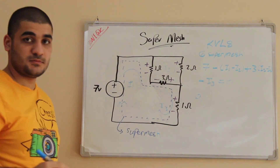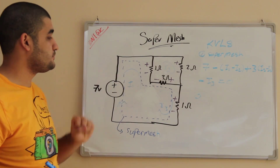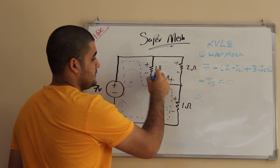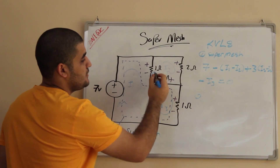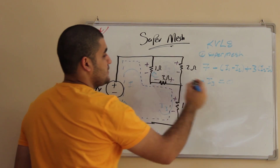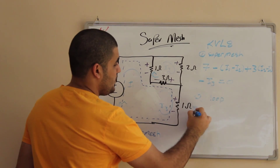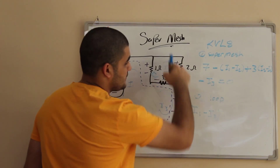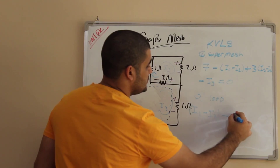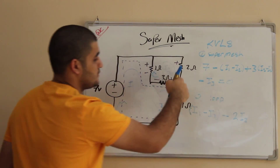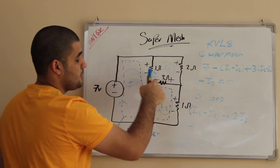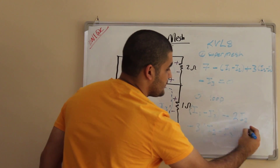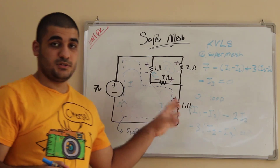Then we write the second equation of the circuit for this loop. Using the same procedures with the arrow — with the sign, so i1 minus i2. Then against the sign: plus minus, 2 ohms times i2. Then 3 ohms times (i2 minus i3). All of that is equal to zero. So these are our equations for this circuit.